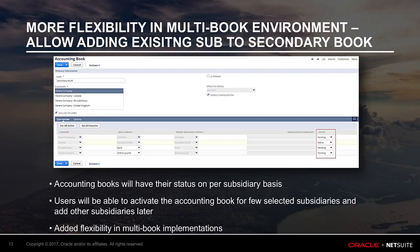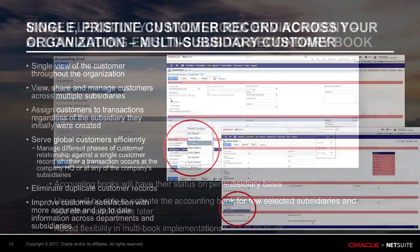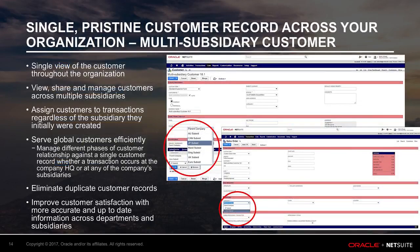Customers will be able to activate individual subsidiaries separately and run historical transactions processing for pending subsidiaries, while other subsidiaries are already active. The multi-subsidiary customer feature provides businesses the ability to have a single customer record across subsidiaries, enabling them to streamline customer records and manage customers across multiple subsidiaries more efficiently.